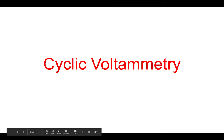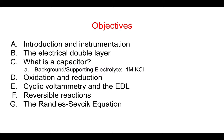Hello, I'm Michael Vitarelli and today we're going to talk about cyclic voltammetry. Our objectives: first, I'm going to talk about the instrumentation, then the electrical double layer. I'm going to review what a capacitor is and how the background produces a capacitive current. We're going to talk about oxidation and reduction, cyclic voltammetry and the electrical double layer, reversible reactions, and finally the Randles-Sevcik equation.